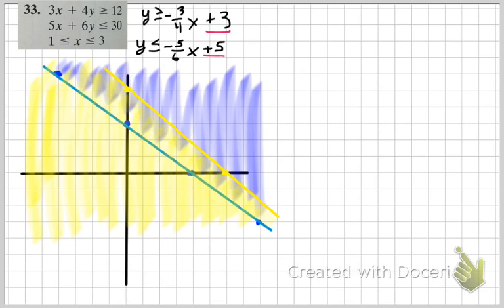And now let's graph our vertical lines. So my first one is going to be a vertical line through 1. And I know that they're vertical because it says x equals.